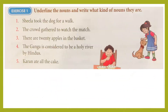Now let's see one exercise. Underline the nouns and write what kinds of nouns they are. See the sentences: number one, Sheila took the dog for a walk; number two, the crowd gathered towards the match; number three, there are 20 apples in the basket; number four, the Ganga is considered to be a holy river by Hindus; number five, Karan ate all the cake. You can underline with pen and write on the right-hand side in the workbook what kind of nouns they are.